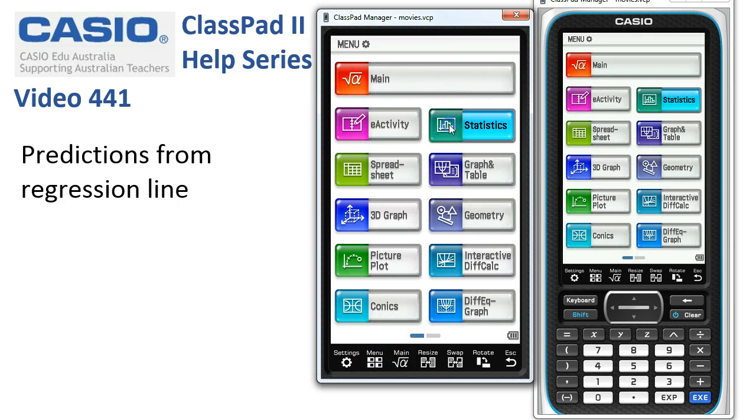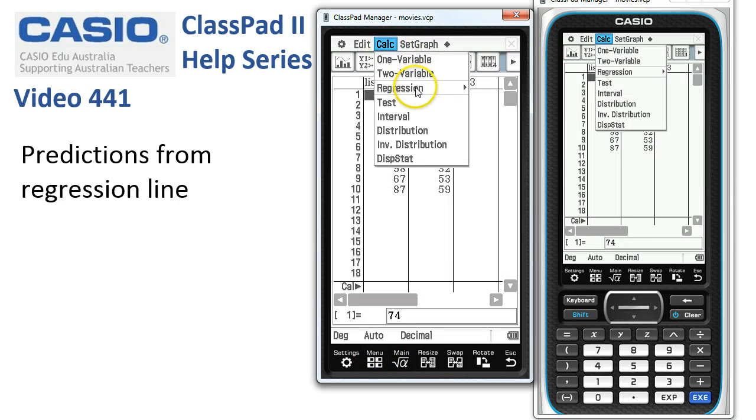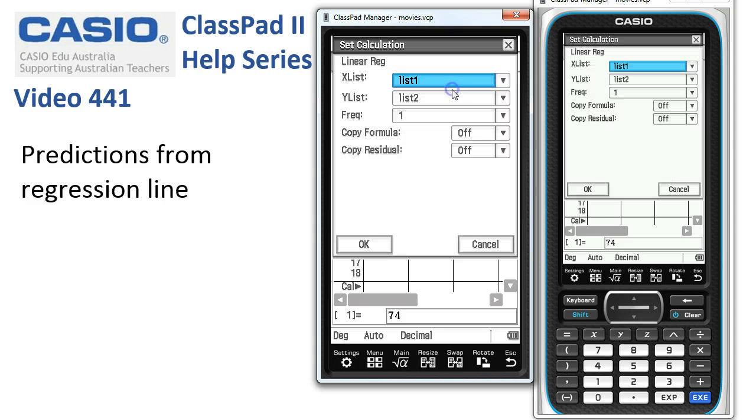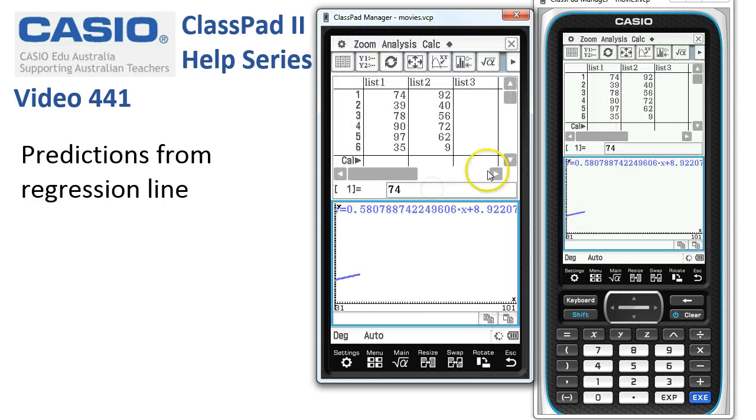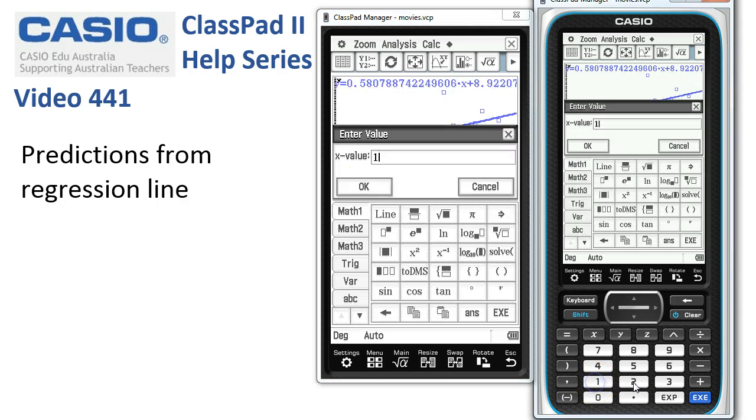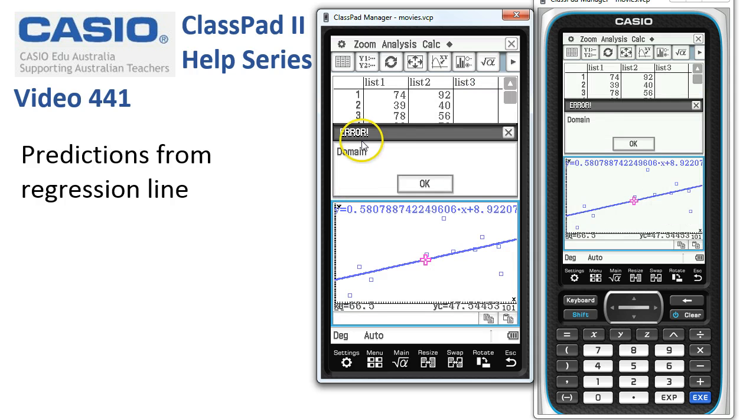Back in statistics, let's just run through that again. Regression, Linear Regression, OK and OK. If I tried that method now and went into trace mode—this is back to Method 1—and typed in 120, what happens when I tap OK is I get a domain error.